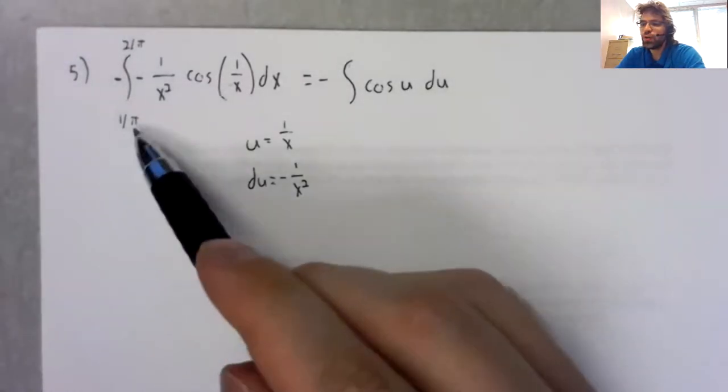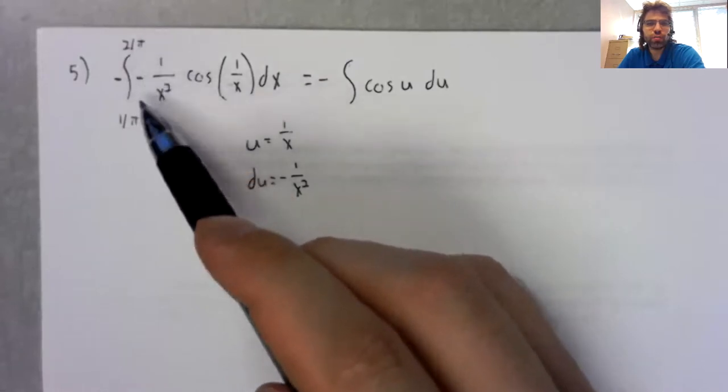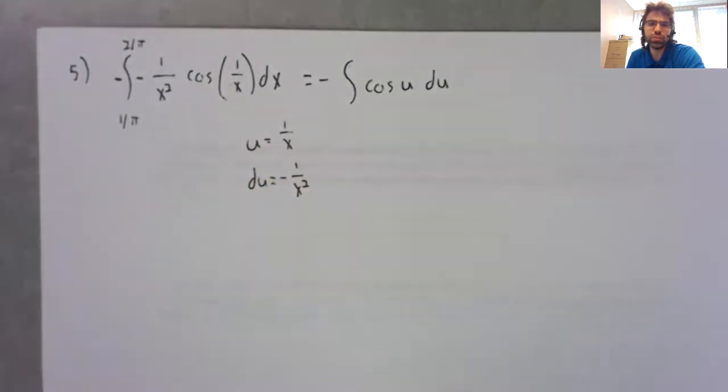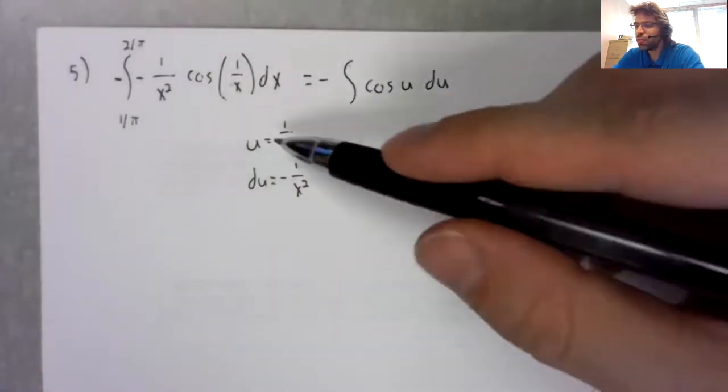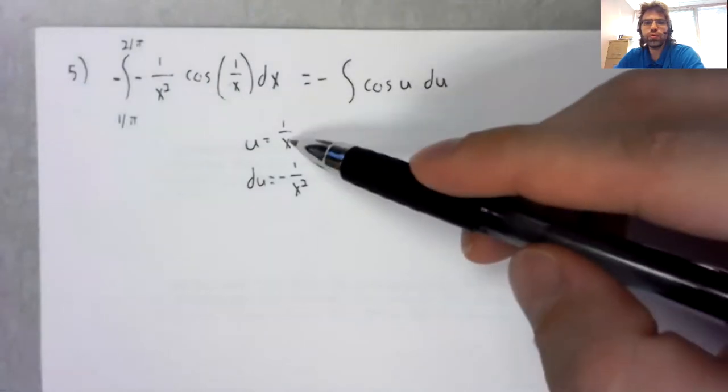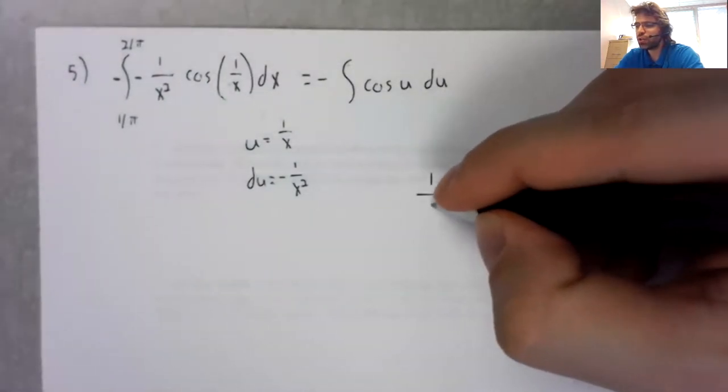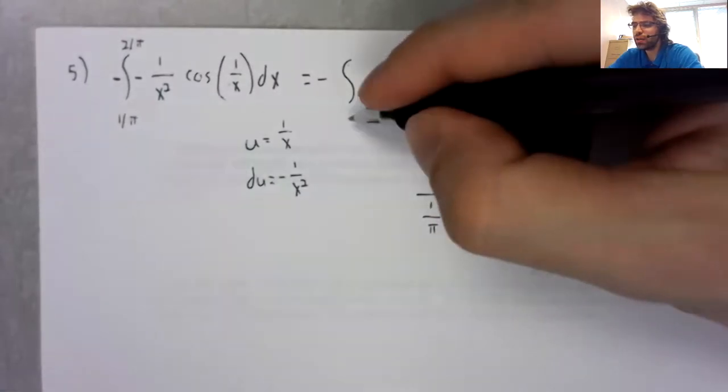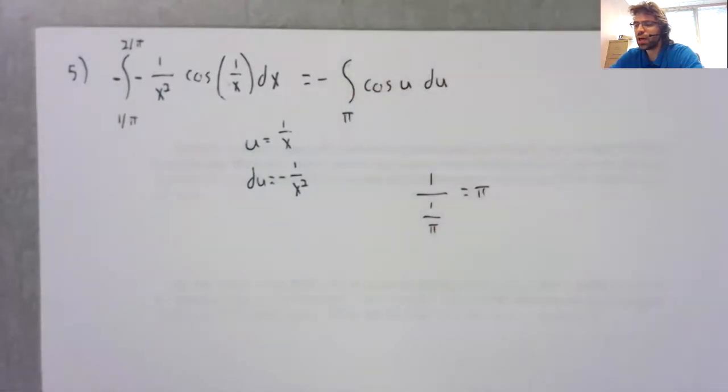And we get the cosine of u du. Now 1 over π and 2 over π are values that x goes between. When x is 1 over π, u is π. 1 over 1 over π is π.